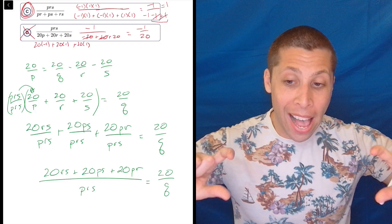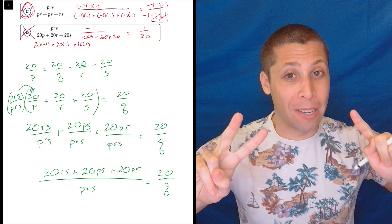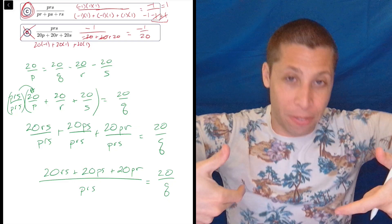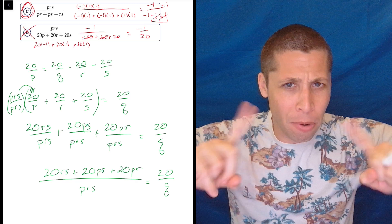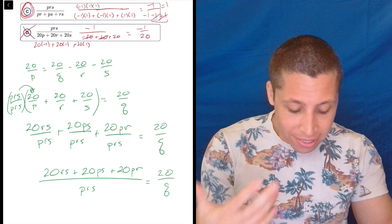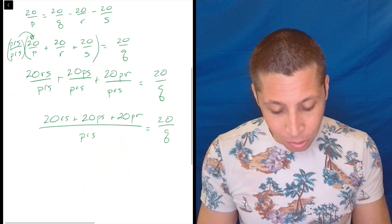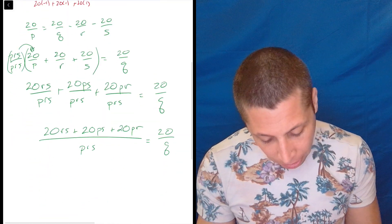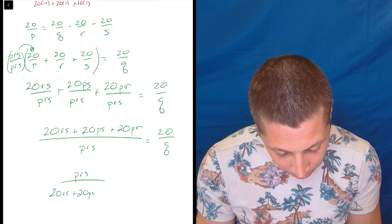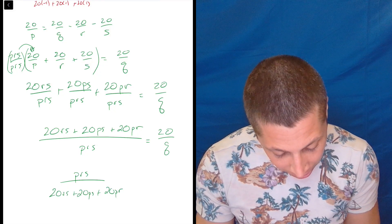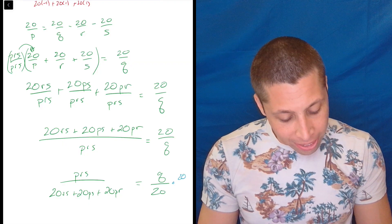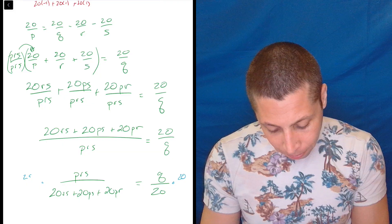Now that we have these fractions, there's only two fractions anymore. If we had it originally, we couldn't just flip everything. We want to, but we can't. I don't think if I'm wrong comment, but I'm pretty sure we can't. So now we can though, now we can flip them because it's basically like a giant ratio. So I want to solve for Q. I want that Q on top. So I'm going to do it. So PRS over 20RS plus 20PS plus 20PR is equal to Q over 20.